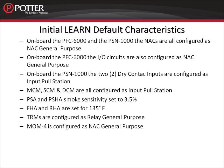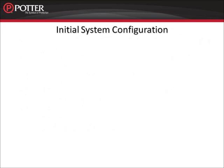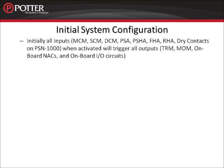These are the default initial characteristics when running a LEARN from the panel. These characteristics can be altered using the upload and download software. Now that we know the initial device characteristics, we can talk about the default system configuration after running a LEARN. Initially, all inputs — the MCM, SCM, DCM, PSA, PSHA, FHA, RHA, and the dry contact inputs on the PSN 1000 — when activated will trigger all outputs: the TRM, the MOM4, the onboard NAC, and the onboard I-O circuits. All of these devices are initially assigned to zone 1.